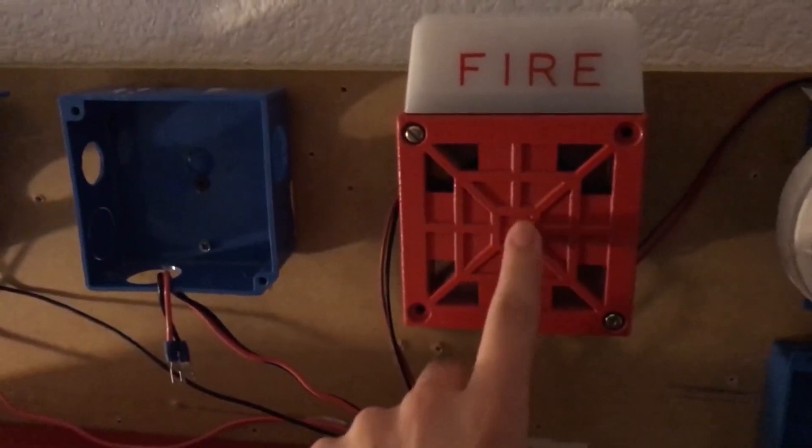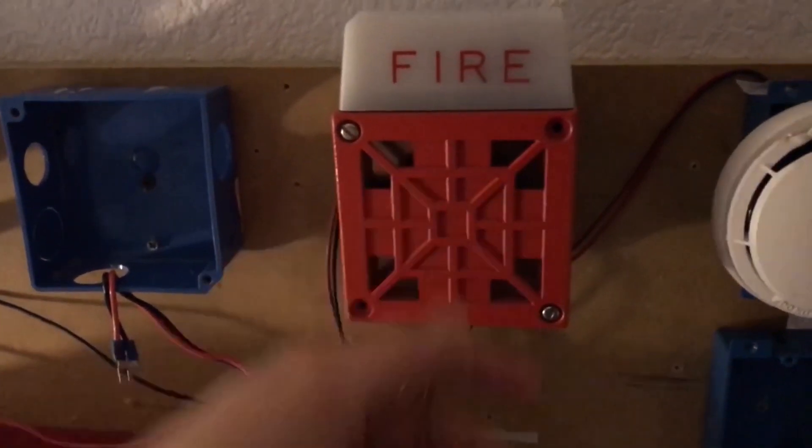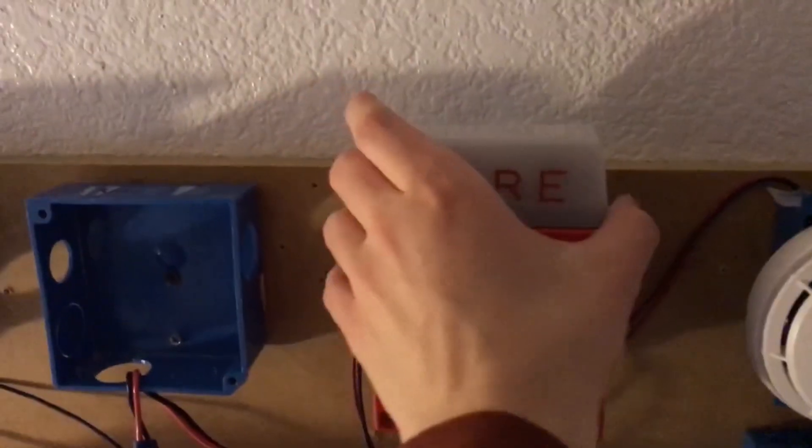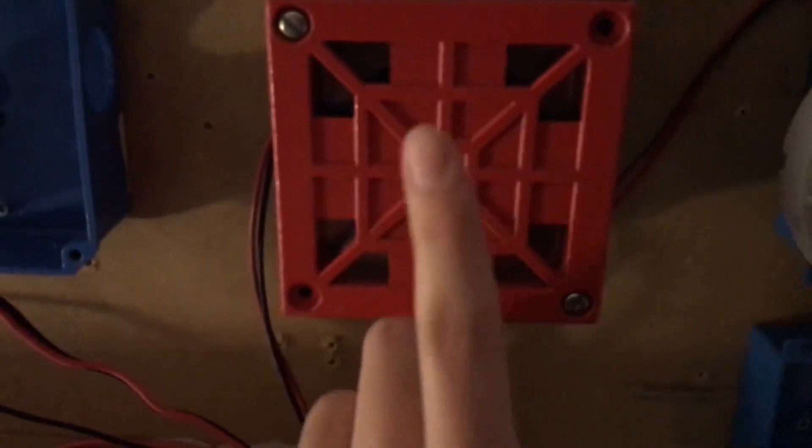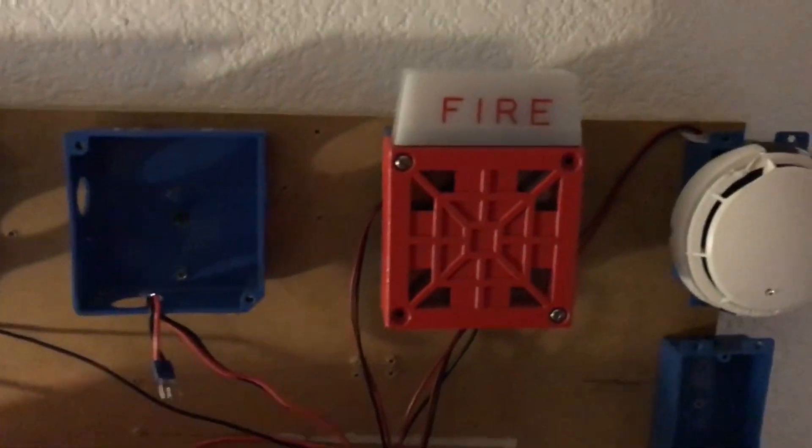Yeah, it's a 988 strobe on the 2T. And the remote horn itself, if there was no strobe on here and this was just a horn, it would be called a Wheelock 3-4T.